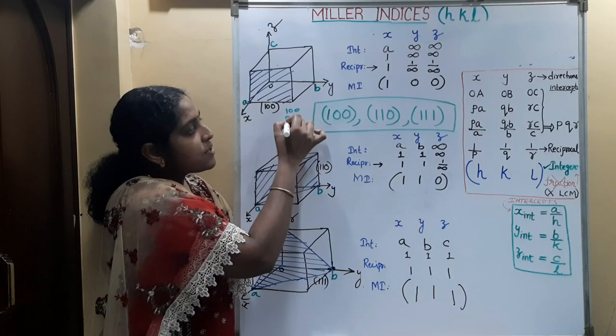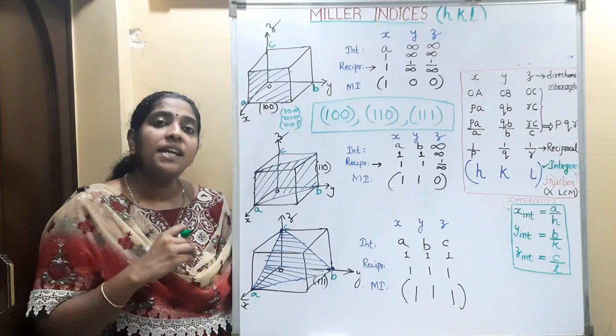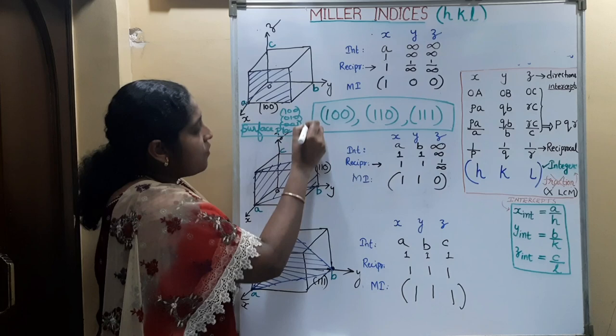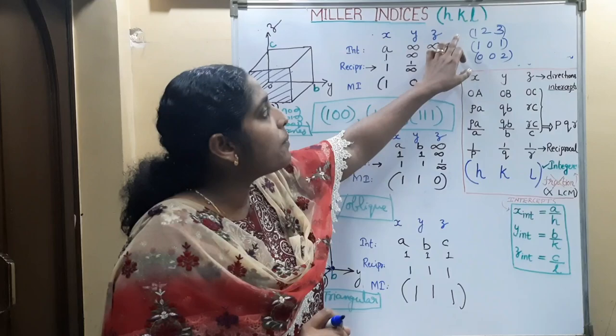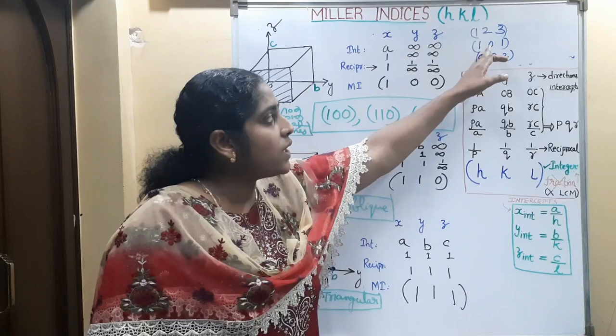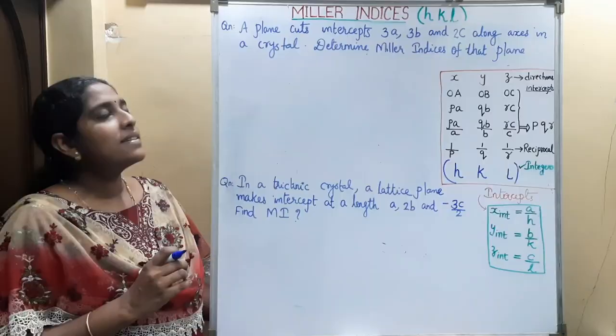The Miller indices (1,0,0), (0,0,1), and (0,1,0) all come under the (1,0,0) family. Similarly, (1,1,0), (1,0,1), and (0,1,1) come under the (1,1,0) family. If the intercept is along the negative axis, we place a bar over that Miller index. The (1,0,0) planes are known as surface planes, the (1,1,0) planes are inclined or oblique planes, and (1,1,1) planes are triangular planes. If no index is 0, the plane is triangular; one 0 gives an inclined plane; two 0s give a surface plane.